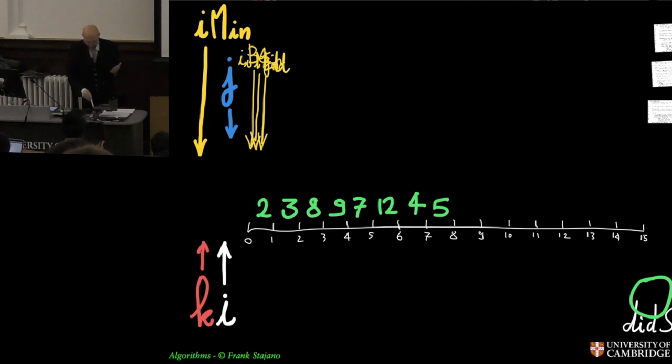And so I have, similarly to insert sort, I have a big loop which moves by one every time scanning all the positions, and the invariant is that the stuff that's to the left of i has already been sorted.